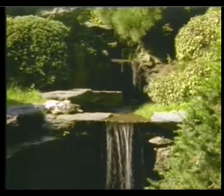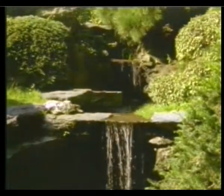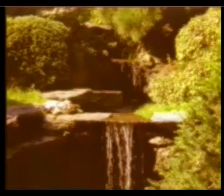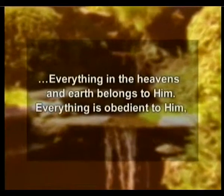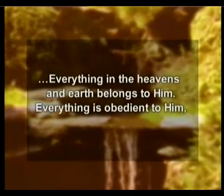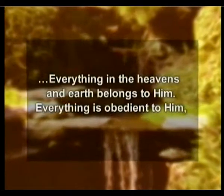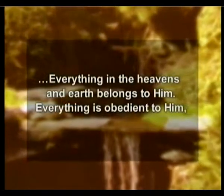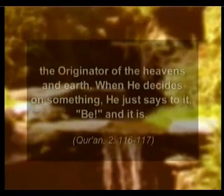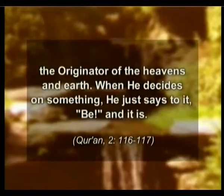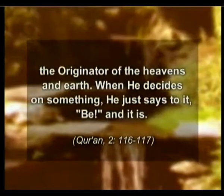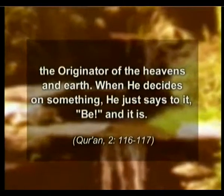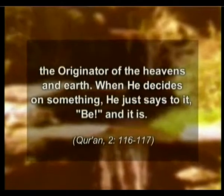God explains His power of creation like this in the Quran: 'Everything in the heavens and earth belongs to Him. Everything is obedient to Him, the originator of the heavens and earth. When He decides on something, He just says to it, Be, and it is.'